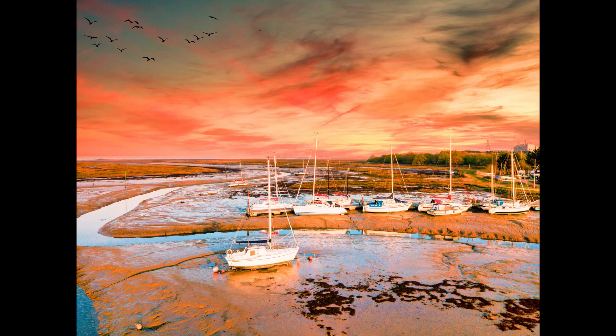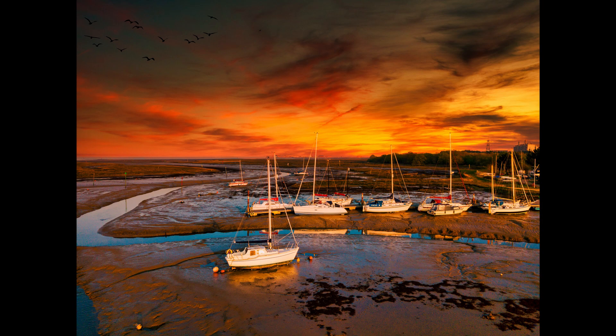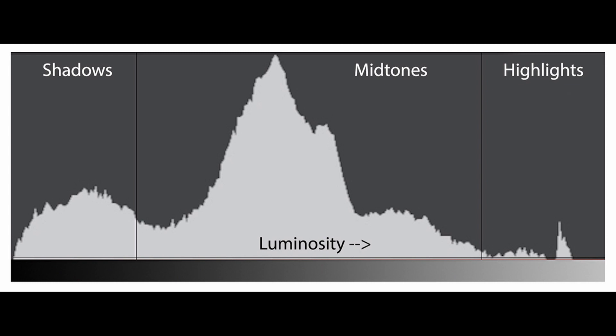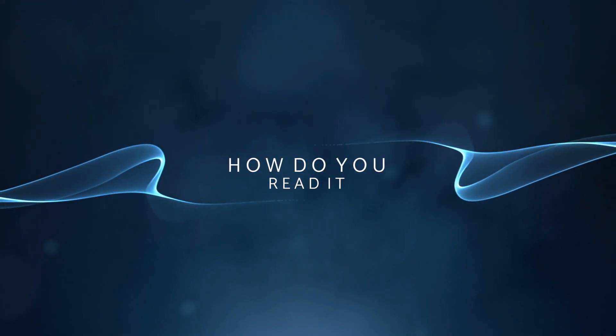Each photo consists of millions of pixels and each pixel contains information about brightness and color. This brightness information is represented in a graphical manner by the camera for us to understand if our photo is underexposed, overexposed, or properly exposed. This image over here is what a histogram looks like, and I'm sure all of you have at least seen this once in your photographic journey and wondered what this graph is and how to use it.